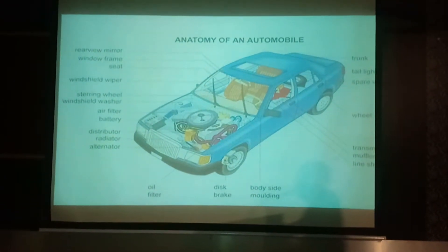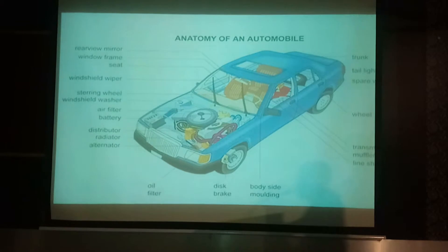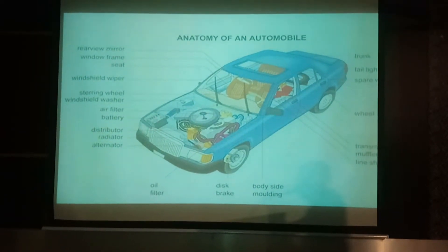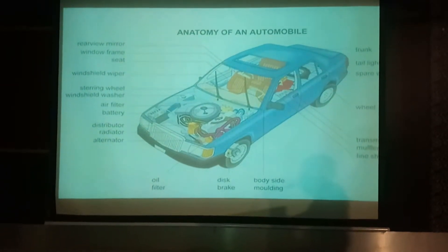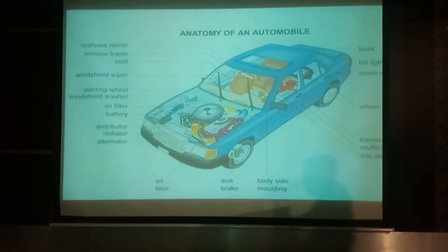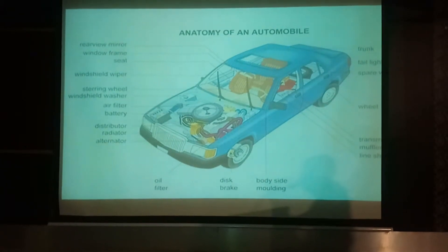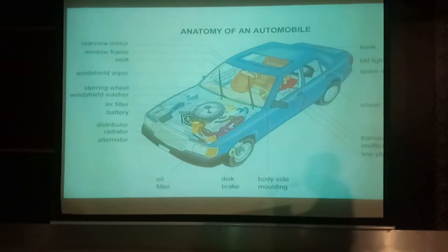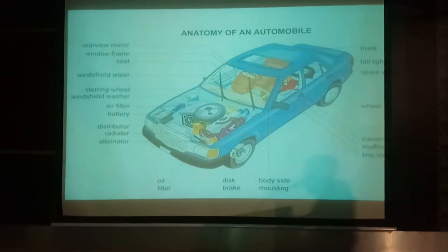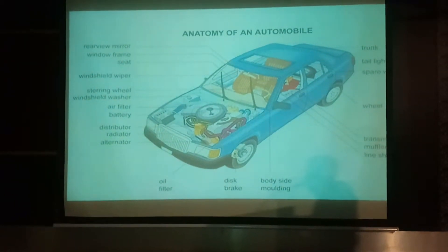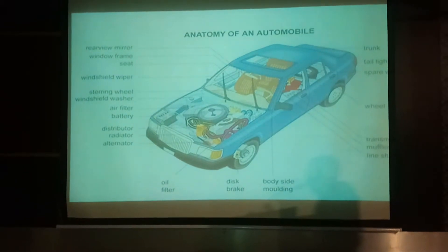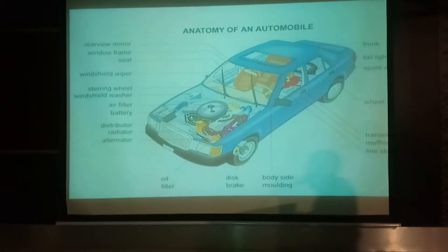Next, layout of automobile. In the front portion, there is a battery distributor, radiator, alternator, and then windshield wiper or windshield washer location. Steering wheel, then rear-view mirror, window frame, seat, body side molding, disc brake, tail light. And then wheel, battery, transmission, and then muffler, light shield.